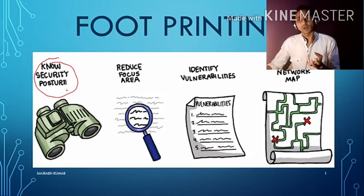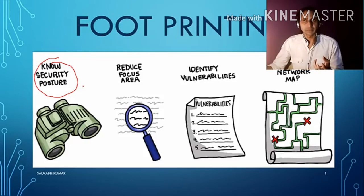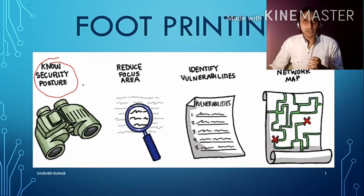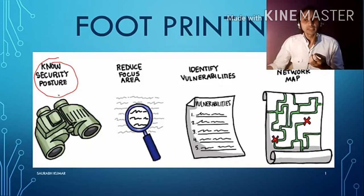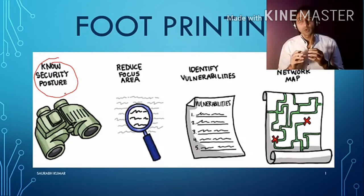If I do footprinting and already know that my victim has a certain website — maybe the website is designed in HTML, maybe in PHP, or maybe in the background they are using SQL Server or Oracle database — then it will give me a security posture: this is what kind of resources my victim is using. So what could the vulnerability be there?